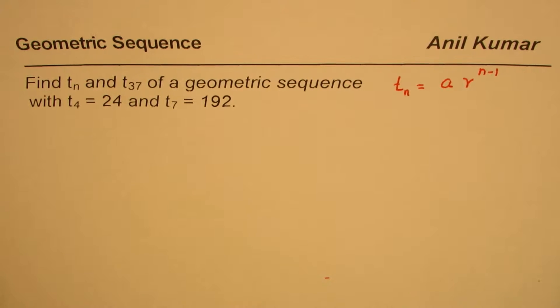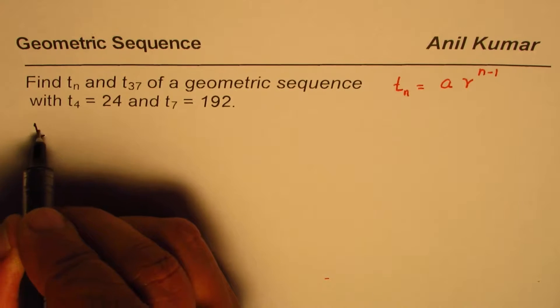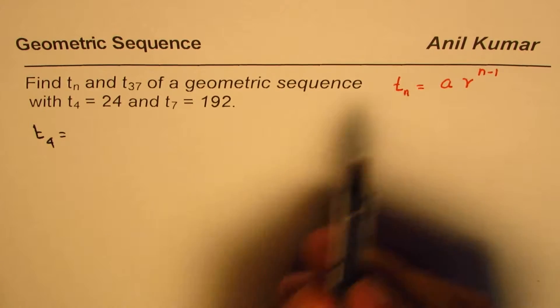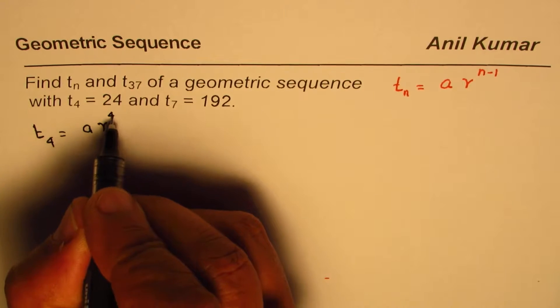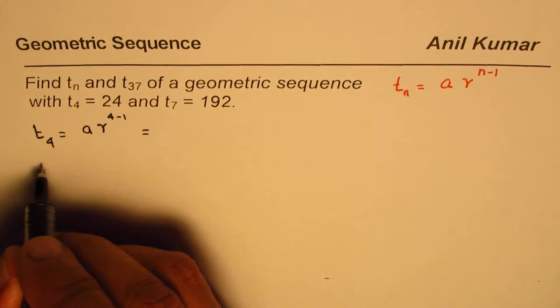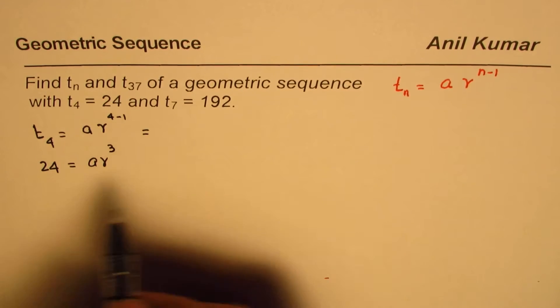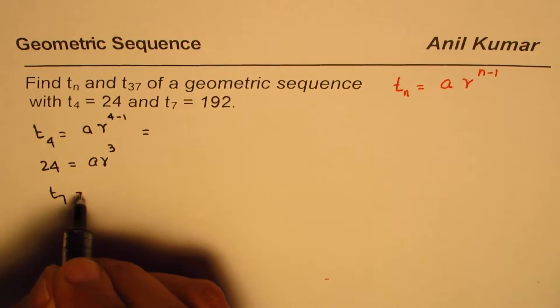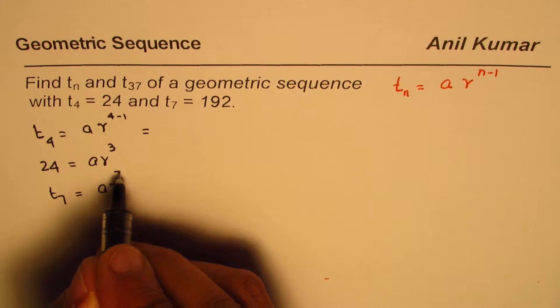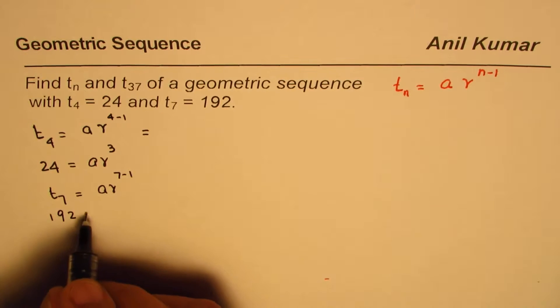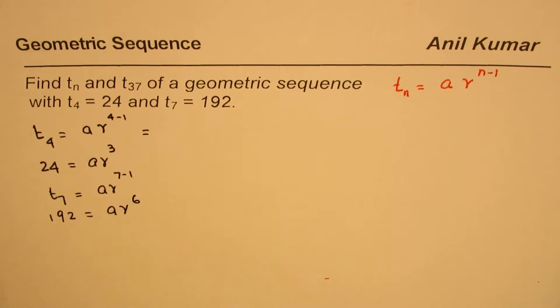Okay, so let's begin. Using the formula, we know the fourth and the seventh term. So T4 can be written as, replacing n by 4, ar to the power of 4 minus 1. We'll write T4 is 24, so 24 equals ar cubed. Similarly, T7 equals ar to the power of 7 minus 1, that is 192 equals ar to the power of 6. So from the given information we have two equations. We need to solve for two variables: one is a, the other one is r, which we can do.